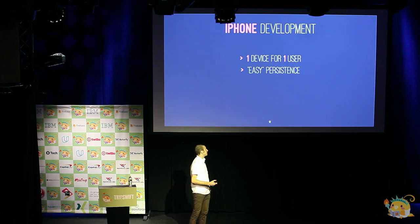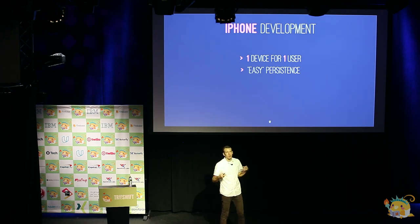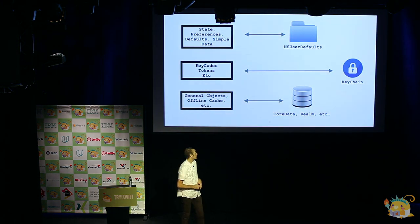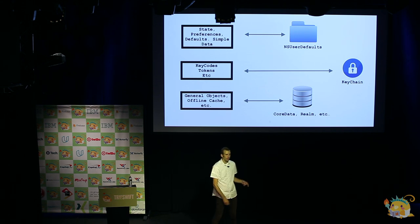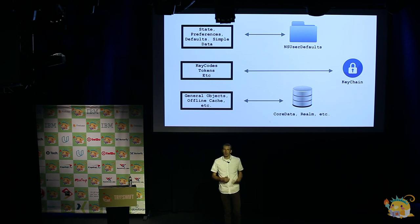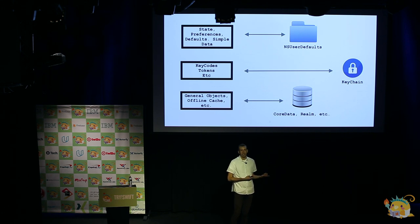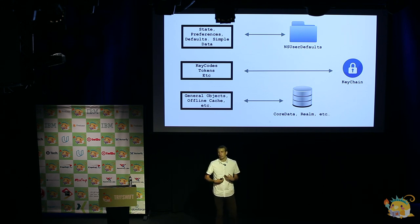Another thing we can count on is easy persistence — in quotes because of course it's not easy, but we do get a lot of tools provided by Apple. If we want to store something like state or simple user preferences, like a color scheme or dark mode, we can stick things in user defaults or the file system without much effort. If we have secure things like API tokens or passwords, Apple provides us with a keychain API and we can store things there feeling pretty confident that the data is secure.